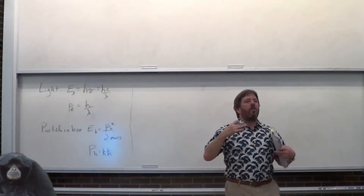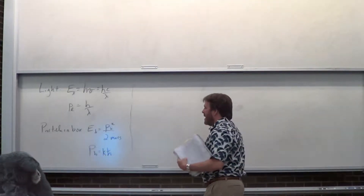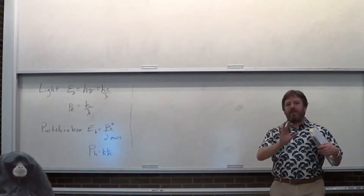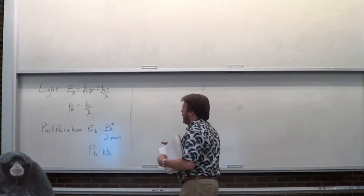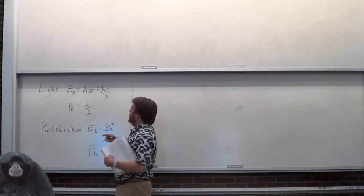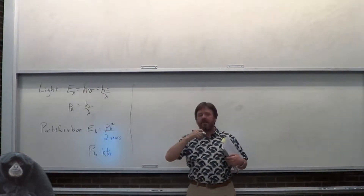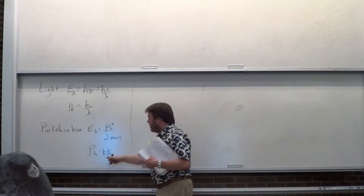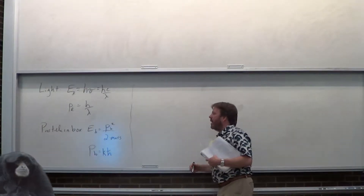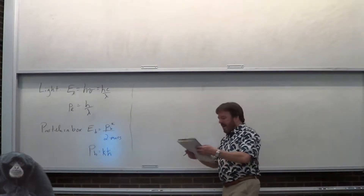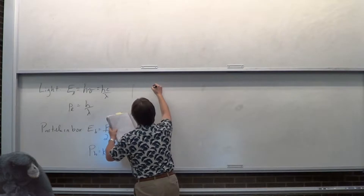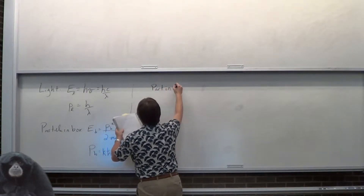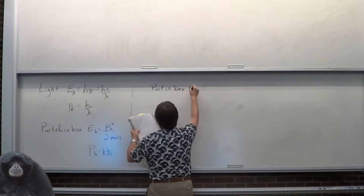So why can a free wave not absorb light? It comes down to the fact that light carries angular momentum. Light's energy is hc over lambda, the momentum is h over lambda, and a particle in a box has this much momentum. Momentum squared gives you that much energy. So let's do particle in a box plus light.